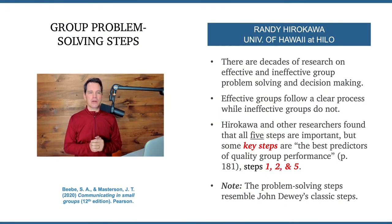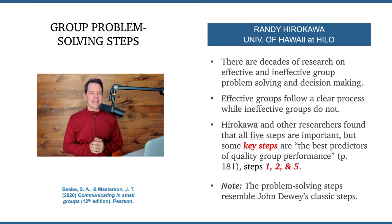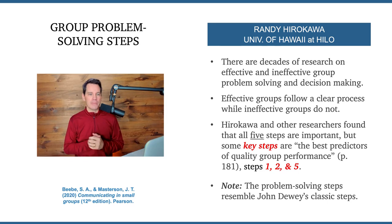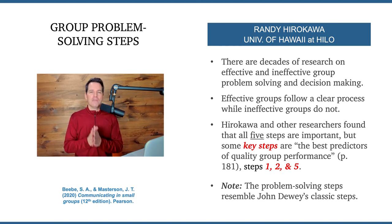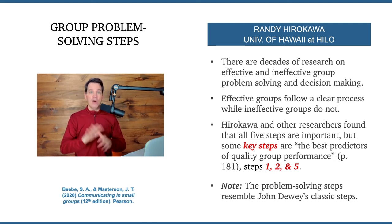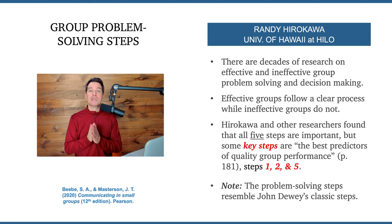Randy Hirakawa from the University of Hawaii, Hilo, has been doing research on groups and group decision-making for decades. He's got lots of great findings on what makes groups effective and ineffective when they are solving problems and making decisions together. Effective groups, he has found, follow a clear process to make those decisions and solve those problems, where ineffective groups do not follow a clear process. Hirakawa and other researchers found that these five steps are all really important, but there are three key steps that are the best predictors of quality group performance — those are steps one, two, and five. I will highlight them as we go.